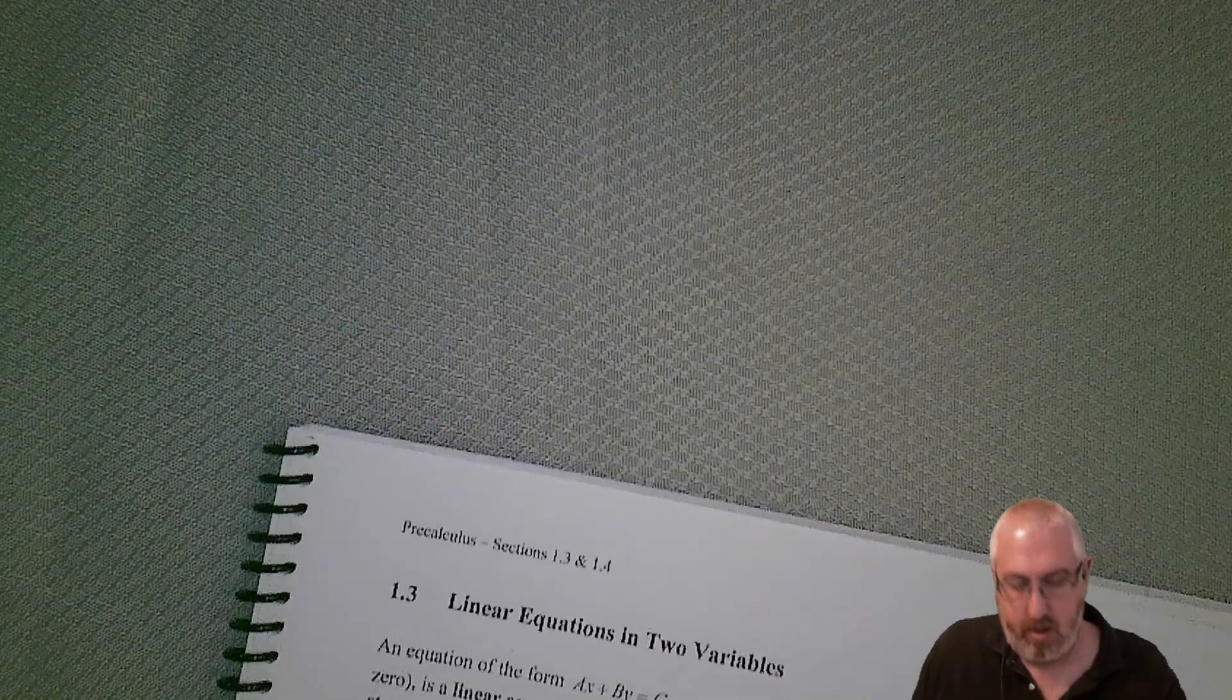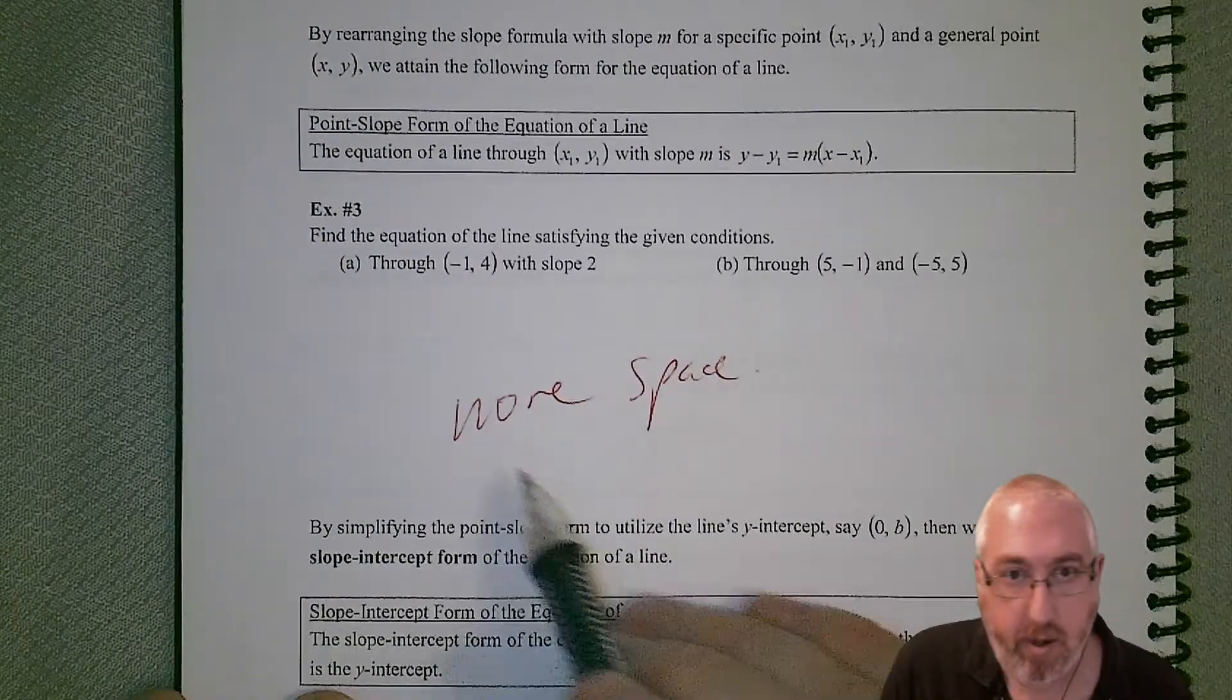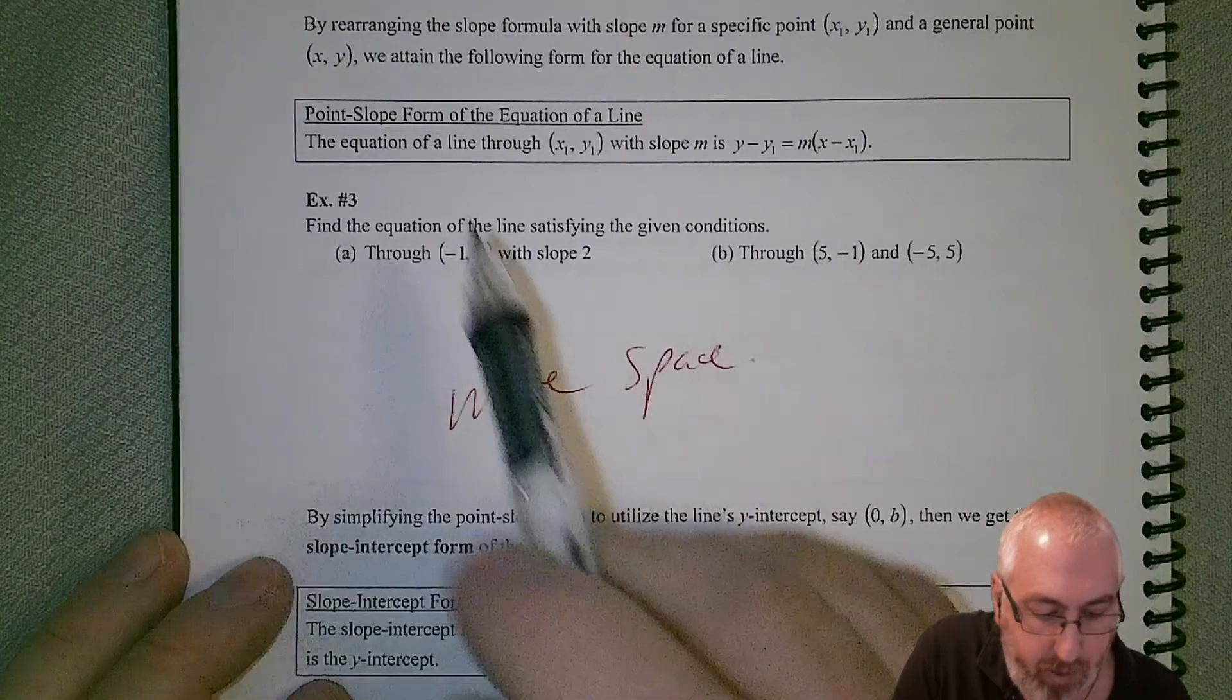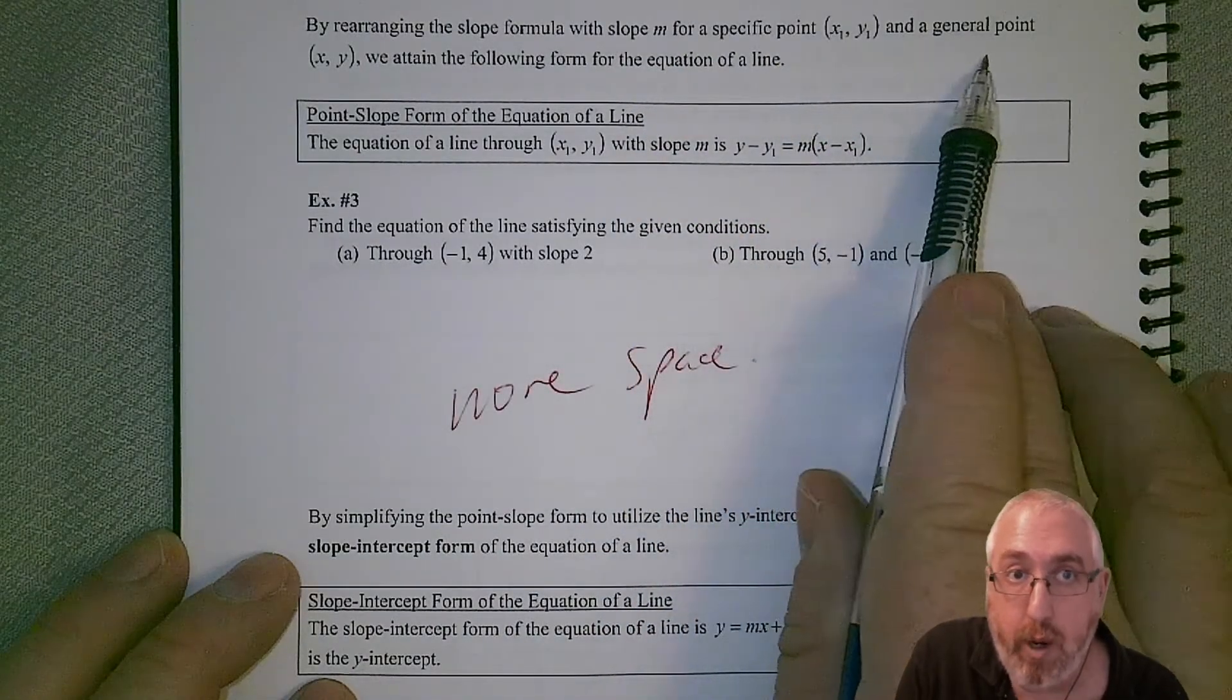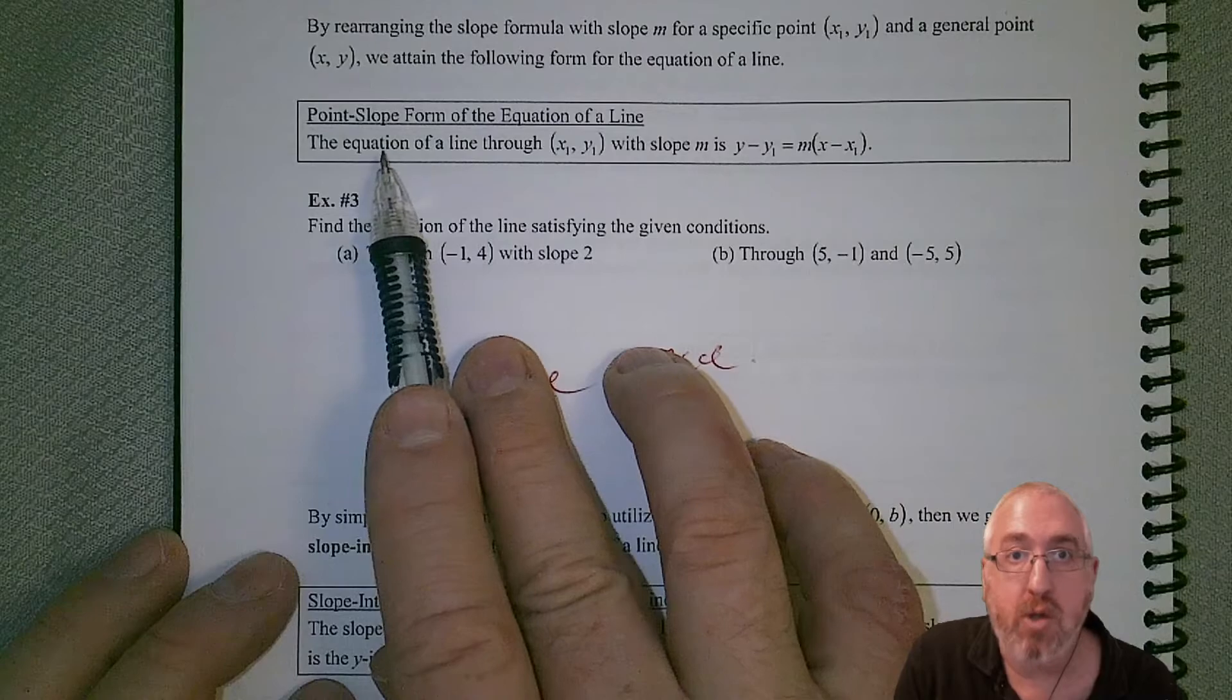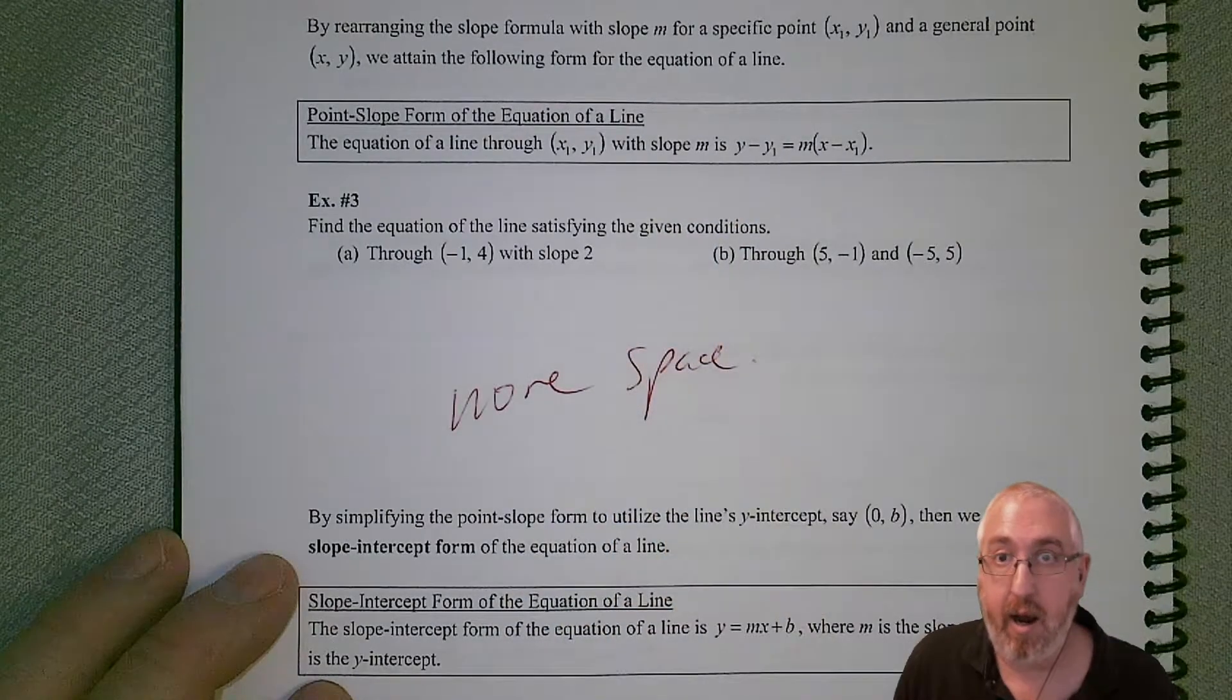All right. That is some slope drawing. Now we can start to put this all together into the equation. You see I got more space. Obviously we might be a little cramped for space when we do these problems. But we'll do our best. By rearranging the slope formula with slope M for a specific point (x1, y1) and a general point (x, y), we attain the following form for the equation of the line. This is the point slope form. We have to have a point that's given to us and a slope that's given to us. Then we can substitute them in to get our equation.